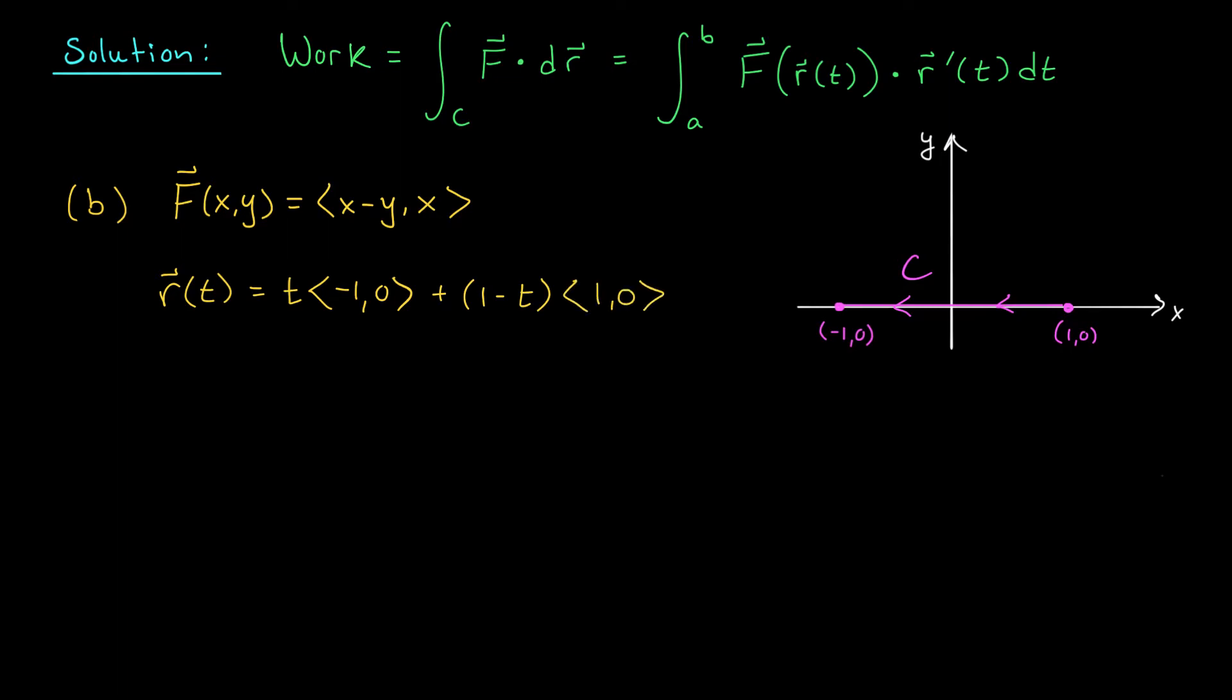If you simplify this, you should find that x is 1-2t, and y is 0. When you use this little parametrization trick for a straight line segment, t is always between 0 and 1.